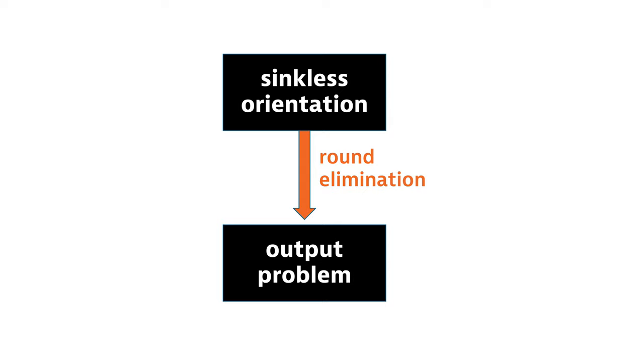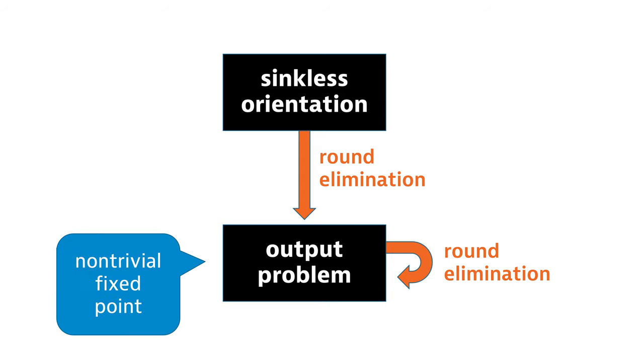Remember that round elimination turns a given problem to another problem that can be solved exactly one round faster. But if you do this repeatedly, starting from the sinkless orientation problem, you will quickly reach a fixed point. You get a contradiction.